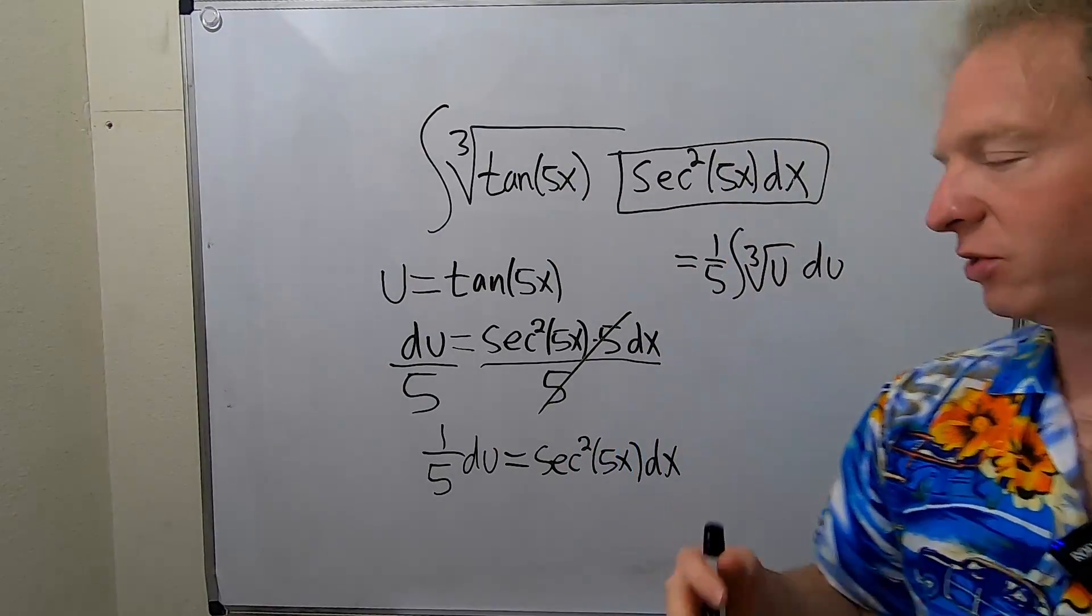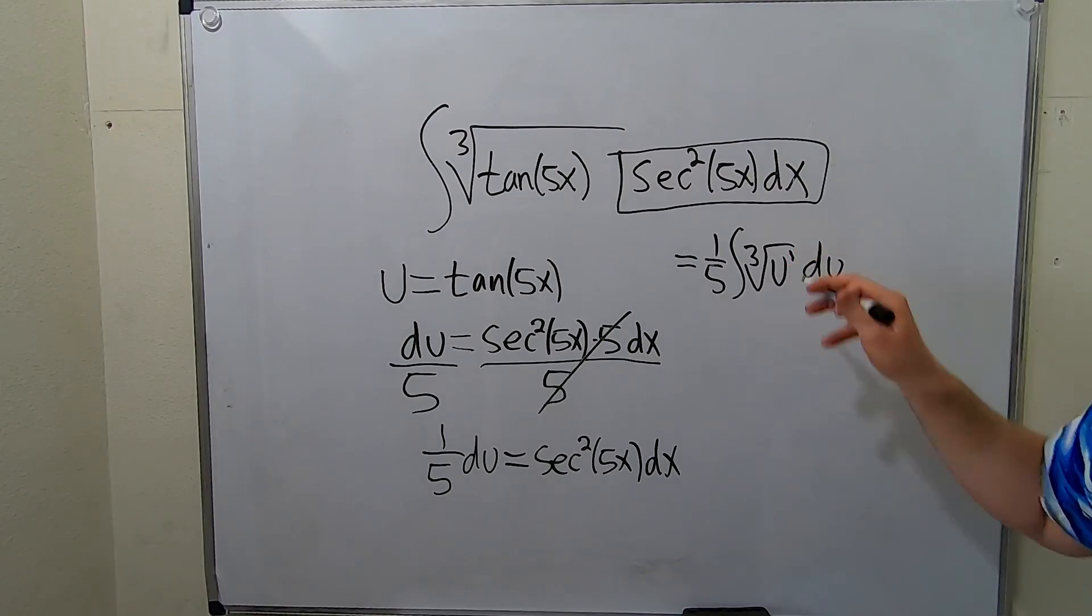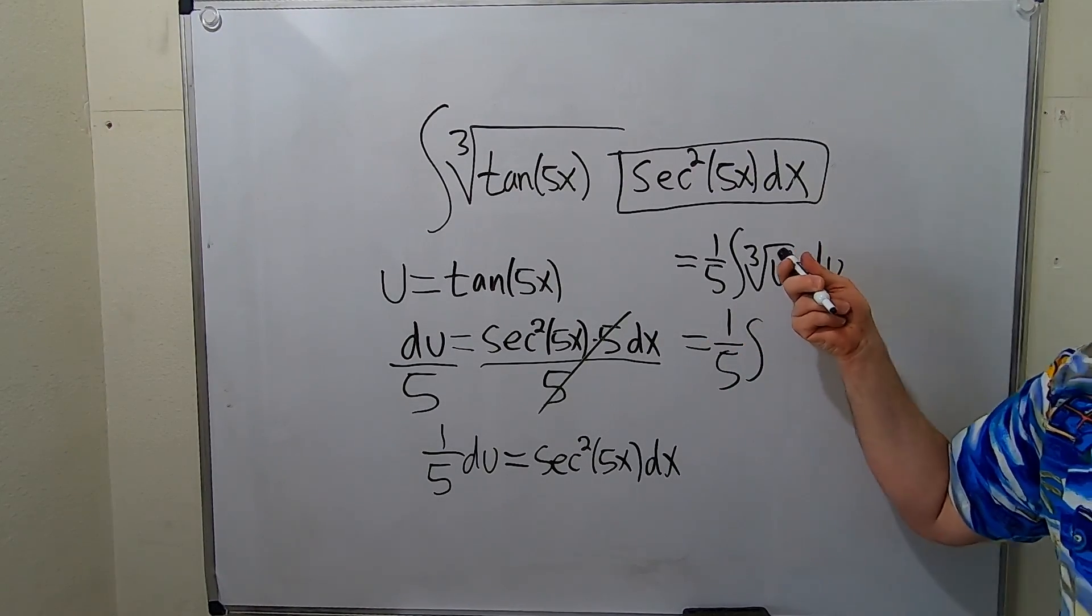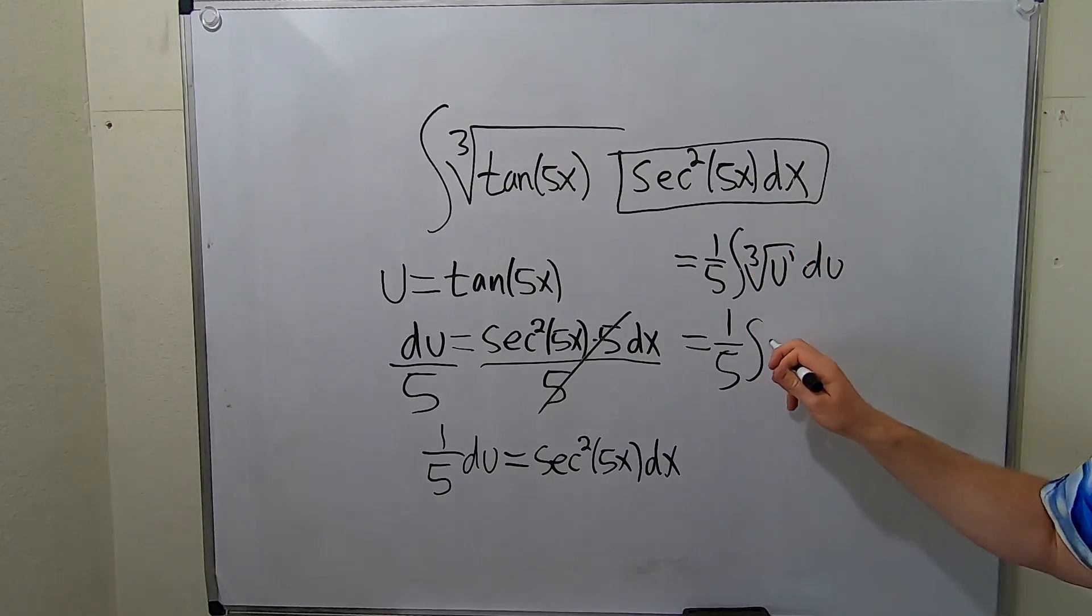So we have to write this as u to a power. So there's a 1 here. So what you can do is you can write it as follows: u to the 1 over 3. So it's u to the 1 over 3, and then you have your du.